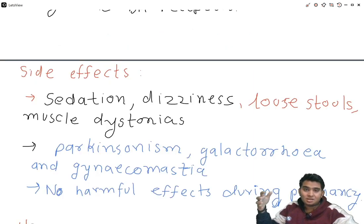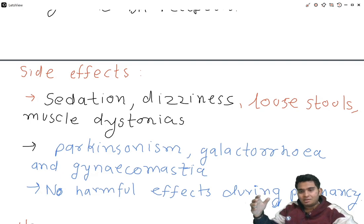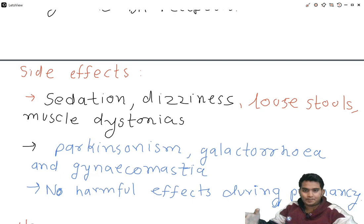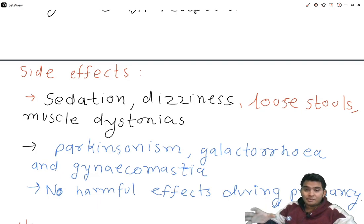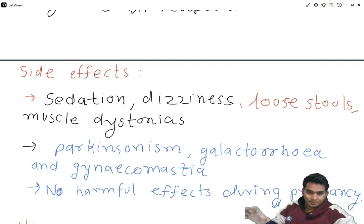Side effects include sedation, dizziness, and loose stools. Muscle dystonia is mainly seen in children. CNS side effects are parkinsonism, galactorrhea, and gynecomastia due to D2 receptor antagonism. Dopamine has an inhibitory effect on prolactin release via the tuberoinfundibular pathway, so blocking dopamine increases prolactin release. No harmful effects during pregnancy are known.